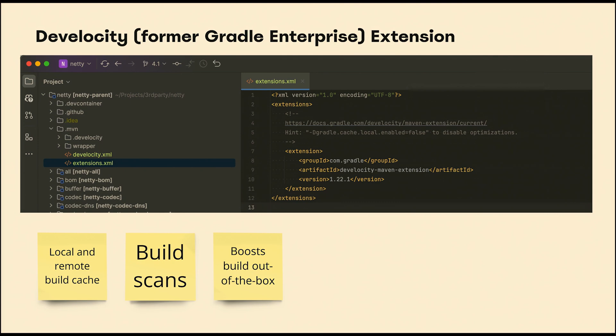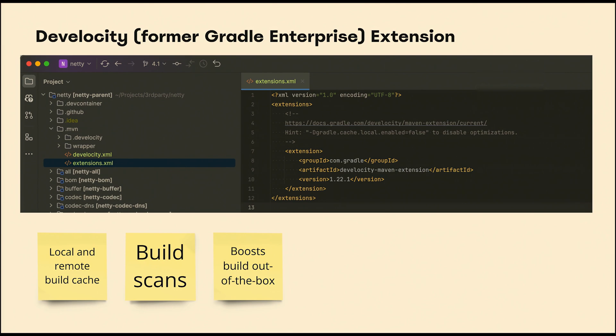Another build caching solution that I generally prefer over the Apache one is Develocity, also known as the Gradle Enterprise extension for Maven. It's pretty easy to integrate — just add it to the extensions.xml — and it will not only provide local build cache and potentially remote build cache, but also give you build scans, which can be a source for insights.